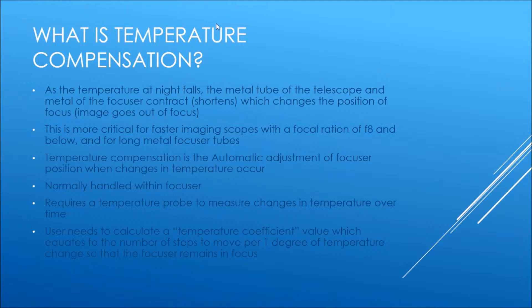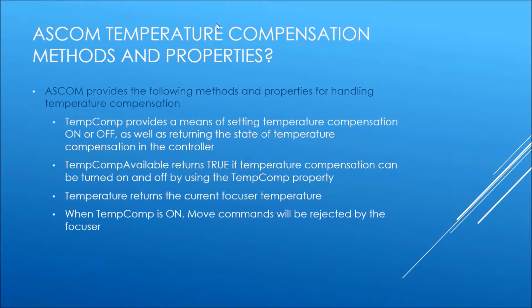Temperature compensation is the automatic adjustment of the focus position when changes in temperature occur, and that is normally handled within the focuser. It requires a temperature probe to measure changes in temperature over time, and the user needs to calculate a temperature coefficient value — the number of steps to move the focuser per one degree of temperature change — so that the focuser remains in focus.